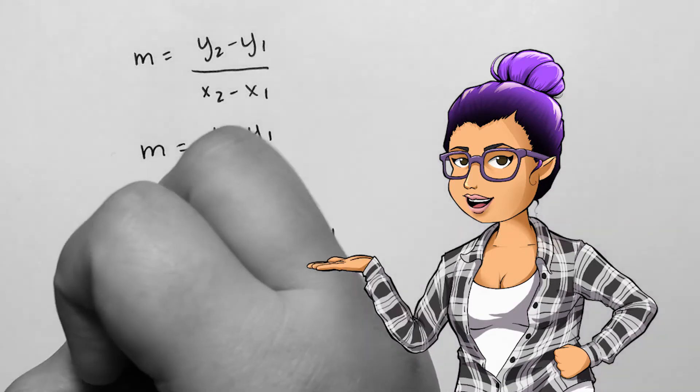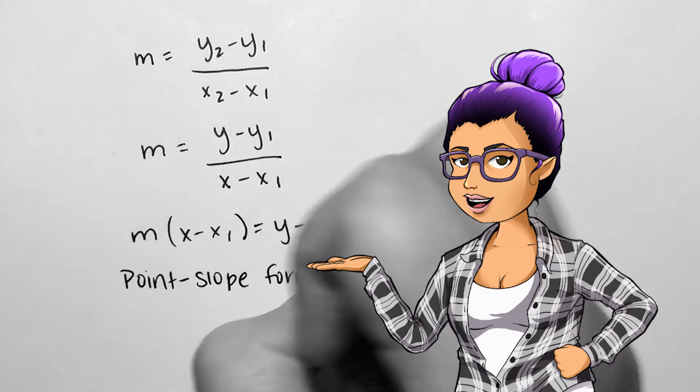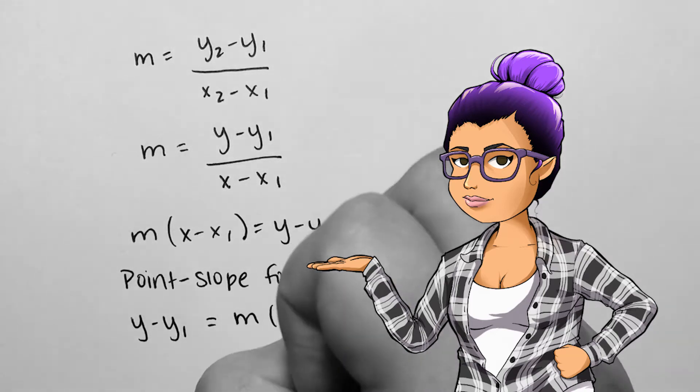If I multiply by the denominator on both sides, I get what's called point slope form: y minus y1 equals m times x minus x1.